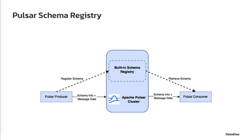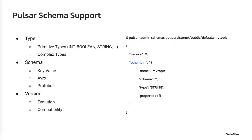This saves the operational overhead and increases the high availability of schema management in Pulsar. The schema support in Pulsar is straightforward — it supports various types, both primitive and complex, schema version evolution, and compatibility check.